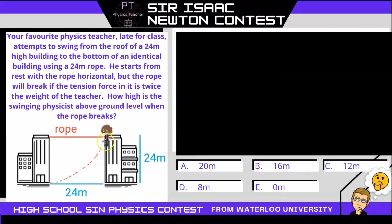In this question we have your favorite physics teacher late for class attempting to swing from one roof 24 meters high to the bottom of an identical building using a 24 meter long rope. It's going to start from rest where the rope is perfectly horizontal.